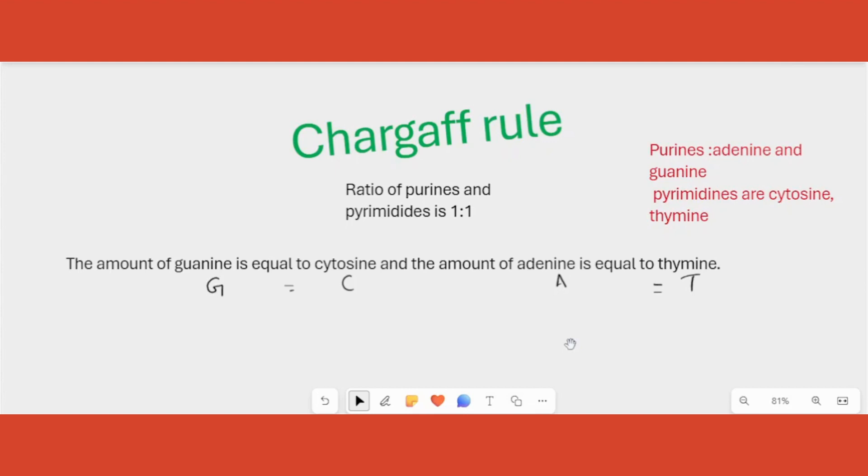So what is this Chargaff's rule? There was a person who came up with an idea that there has to be a ratio of purines and pyrimidines in 1 is to 1. What exactly are purines and pyrimidines? I hope you remember when we talk about the DNA structure, DNA is made up of nucleotides and nucleotides have three subunits - that is a sugar is there, a phosphate is there, and then nitrogen bases are there. Nitrogen bases are classified into purines and pyrimidines.